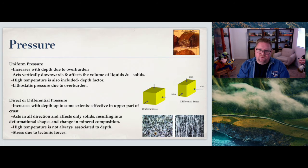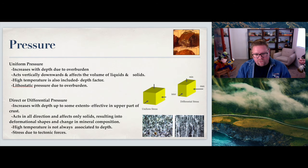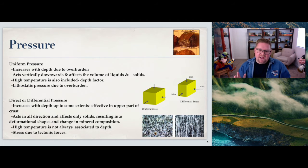Direct or differential is a little bit different. It also increases with depth to a certain extent, acts in all directions and affects only solids, resulting in deformational shapes and changes in that mineral composition. High temperature is not always associated with depth when looking at direct or differential pressure, and stress due to tectonic forces will add to it. The diagram on the left is showing both - uniform stress versus differential. In uniform, you have very similar grain size crystals, probably a piece of granite. But on the right, showing differential stress, notice that because it's being pressed more on the side, it's allowing for those minerals to reband and become parallel to one another in a linear line, creating this type of banding which we would acknowledge as being gneiss (G-N-E-I-S-S), which is a type of metamorphic rock.